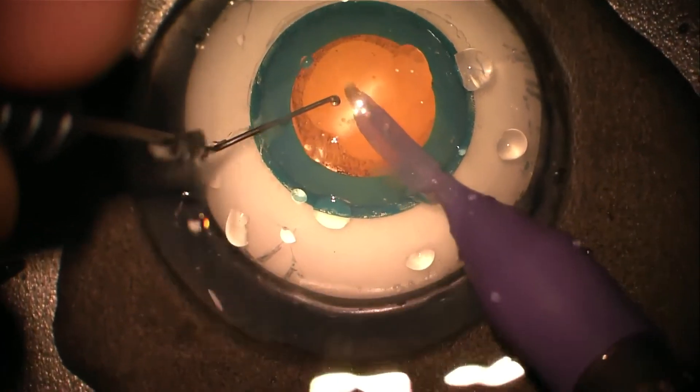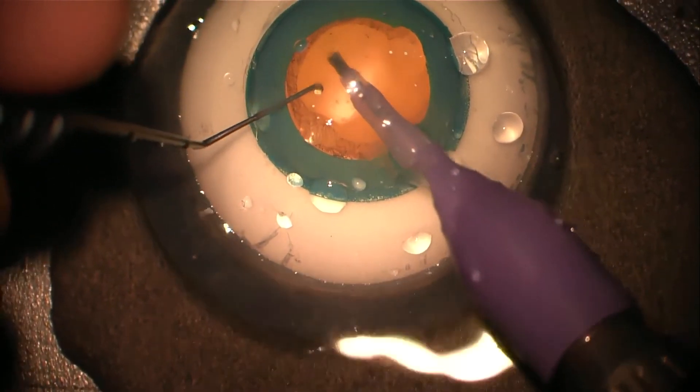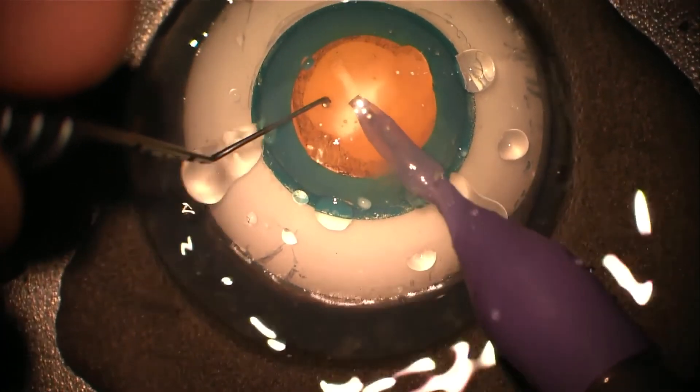And finally just completing the fourth groove, again avoiding the anterior edge of the rhexis before dividing the nucleus into quadrants.